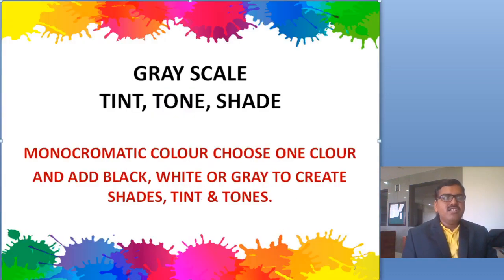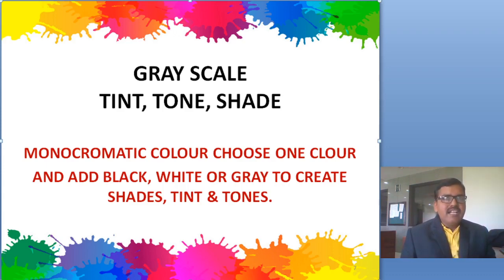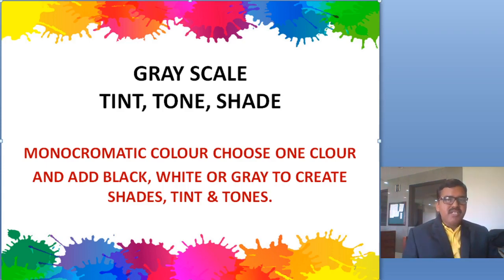Now let's see what grayscale, tone, and shades are. Monochromatic colors choose one color and add black, white, and gray to create shades, tints, and tones. This means in any color, mixing black, white, and gray gives tint, tone, and shades. After black and white are mixed, it becomes gray color. After gray and white are mixed, it becomes grayscale.